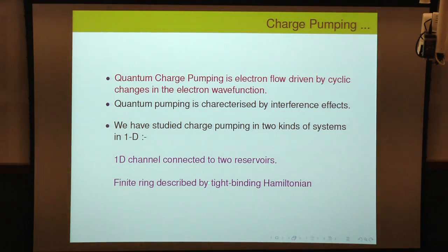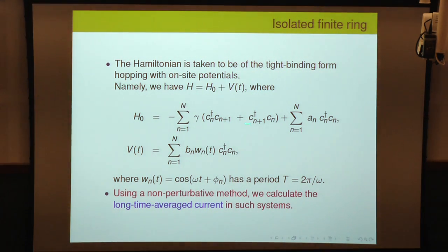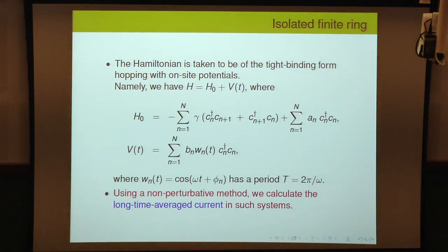The other system we considered was a finite ring described by a tight-binding model. The Hamiltonian is written in second-quantized language with hopping from the (n+1)th site to the nth site, a finite number of sites, and periodic boundary conditions so that site N+1 is identified with site 1. There are on-site potentials, and these can be time-dependent with period T. The time-dependent potential w_n(t) has different phases φ_n on different sites and amplitudes b_n.